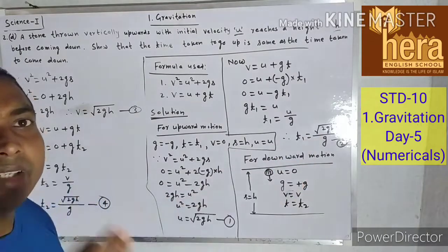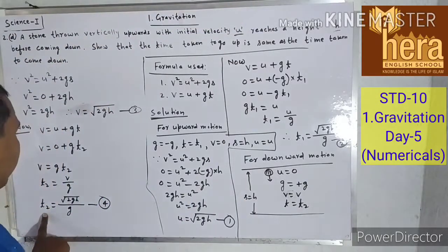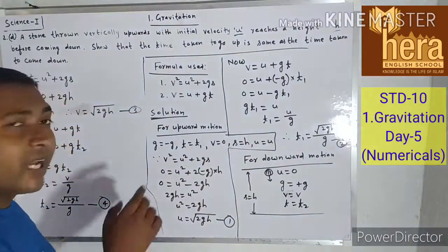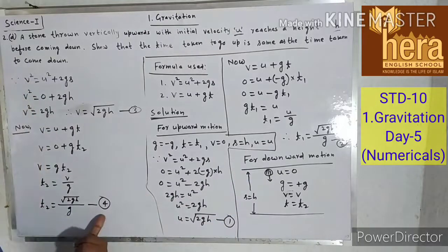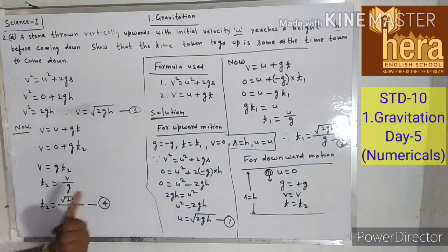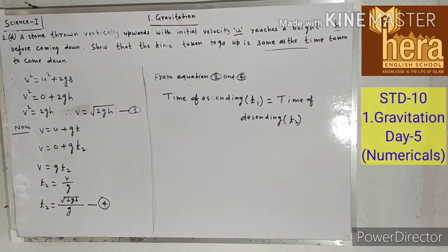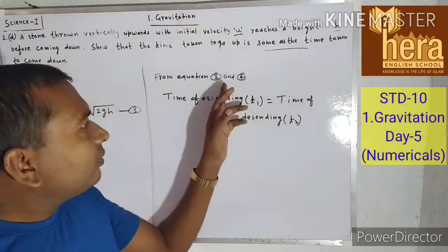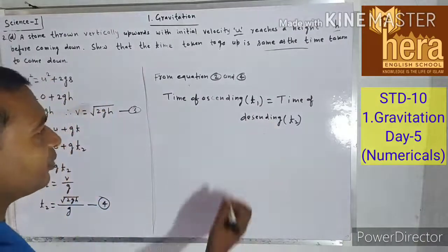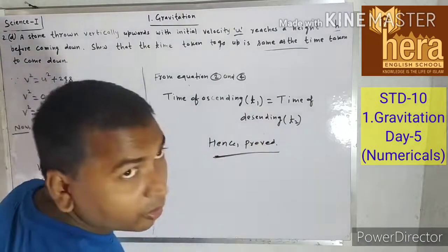T1 is the time taken by an object to reach maximum height; T2 is the time taken by the object to reach the ground. From equations 2 and 4, time of ascending T1 = time of descending T2. Hence proved. I hope you understood.